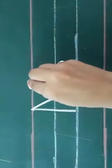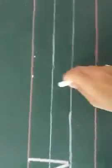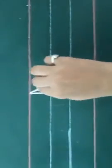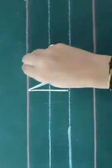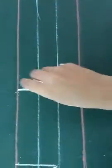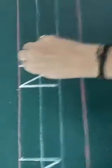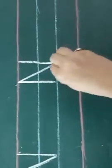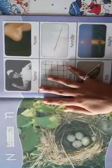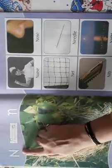Standing line, slant line and again standing line. This is letter N. Standing line, slant line and standing line. This is letter N. Standing line, second slant line and third again standing line. This is letter N.